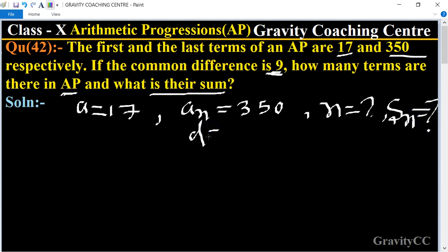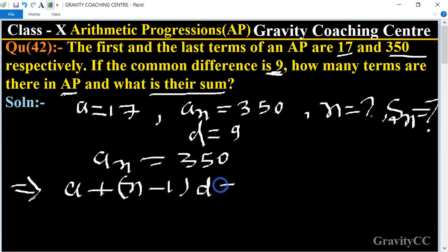So here the nth term is 350, and we know that the formula of an equal to a plus (n minus 1)d equal to 350.